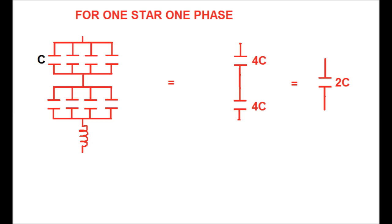The equivalent combination for four units in a parallel group gives 4C. This 4C capacitance is then connected in series with another 4C. When two capacitors of equal value are connected in series, the equivalent value is half. Therefore the equivalent capacitance for each star in one phase comes to 2C.